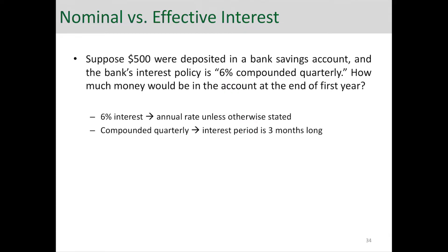So, two things to start with. First of all, the 6% interest is an annual rate. Whenever it's not mentioned, the assumption is that the rate is an annual rate. The second important point, which is the key point of this example, is that the compounding occurs every quarter — the money that you deposit gets compounded every 3 months, which is a quarter. So the interest period is 3 months long and in a year we have 4 interest periods, 4 quarters.